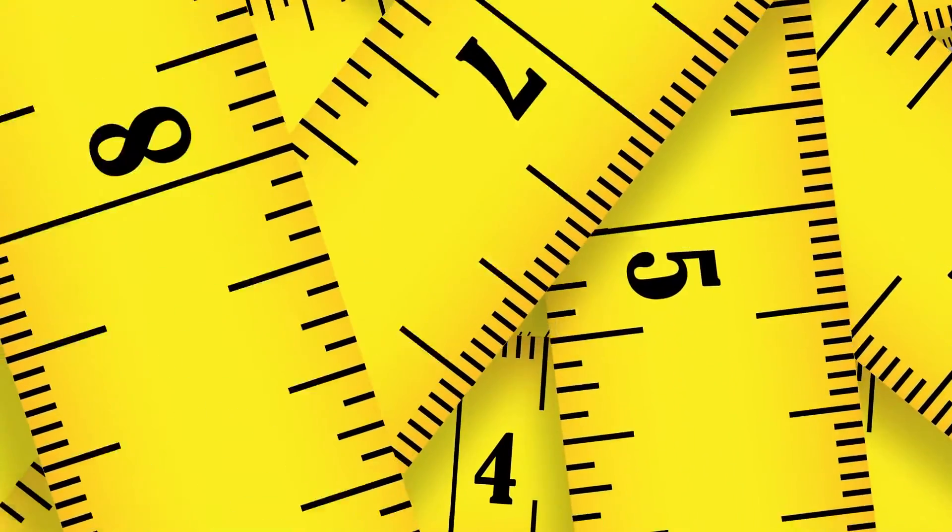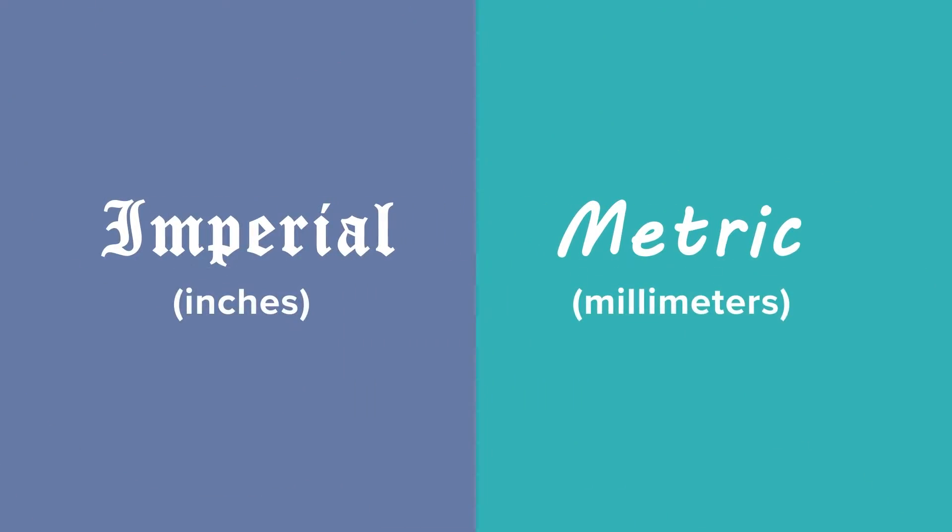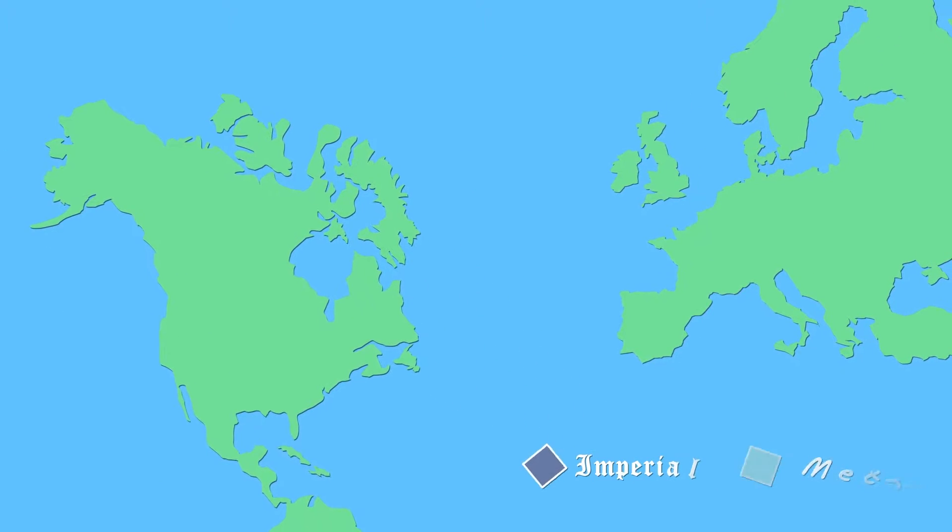So you've probably noticed that they come in both metric and imperial sizes. This is because, depending on where you are in the world, one measurement is usually more prevalent than the other.